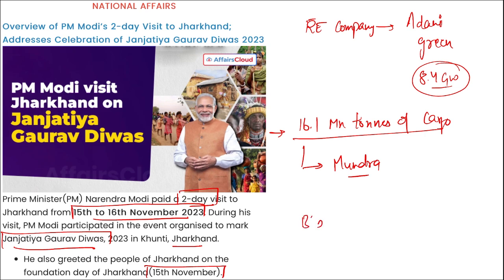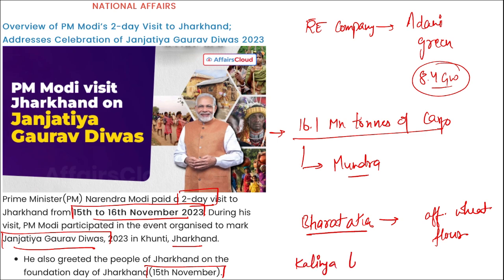Bharat Atta is an initiative for affordable wheat flour. Then, the Kalinga Literary Festival — the 10th edition was observed in Bhubaneswar.